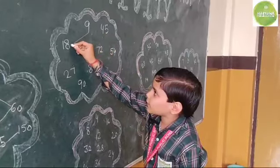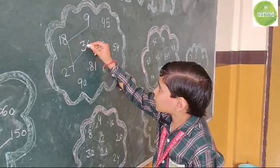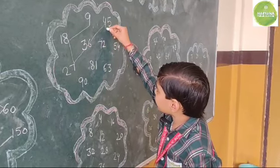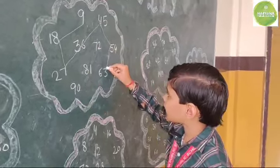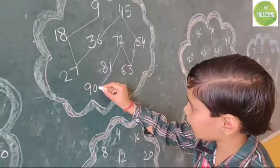9 times 2 is 18, 9 times 3 is 27, 9 times 4 is 36, 9 times 5 is 45, 9 times 6 is 54, 9 times 7 is 63, 9 times 8 is 72, 9 times 9 is 81, 9 times 10 is 90.